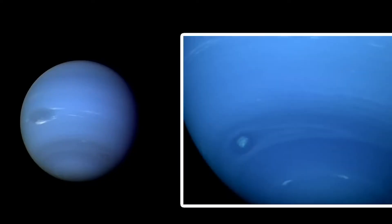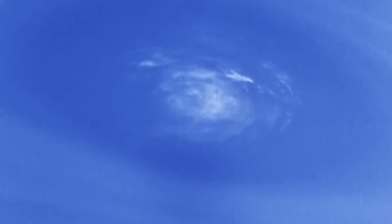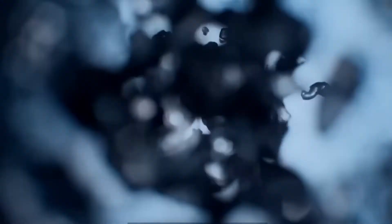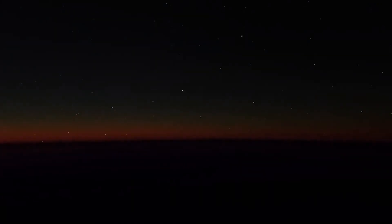Layers of the atmosphere: Neptune's atmosphere is divided into several layers. The outermost layer, where most of the visible cloud features exist, is composed of hydrogen and helium. Below this layer, the atmosphere transitions into denser and warmer regions.